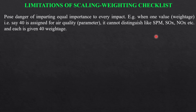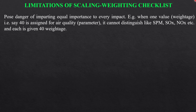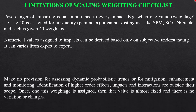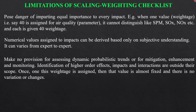There are limitations in the weighting checklist — it poses the danger of importing equal importance to every impact. When a value of 40 is assigned to air quality, it cannot distinguish whether suspended particulate matter, SOX, or NOX each warrant that same value. Additionally, numerical values assigned to impacts are based on subjective understanding, varying from expert to expert, and the method makes no provision for assessing dynamic, probabilistic trends, mitigation, enhancement, or monitoring. Once weightage is assigned, the values are essentially fixed.